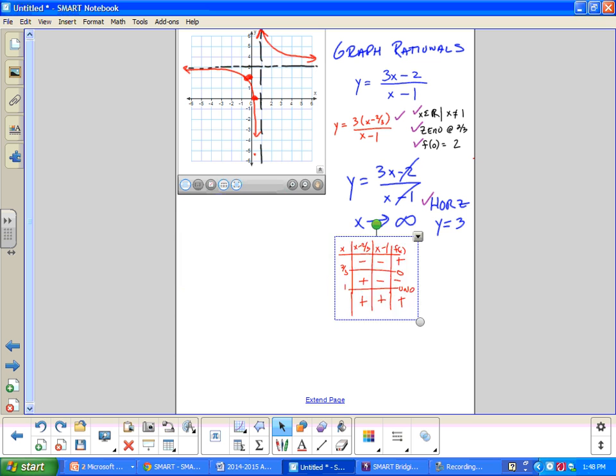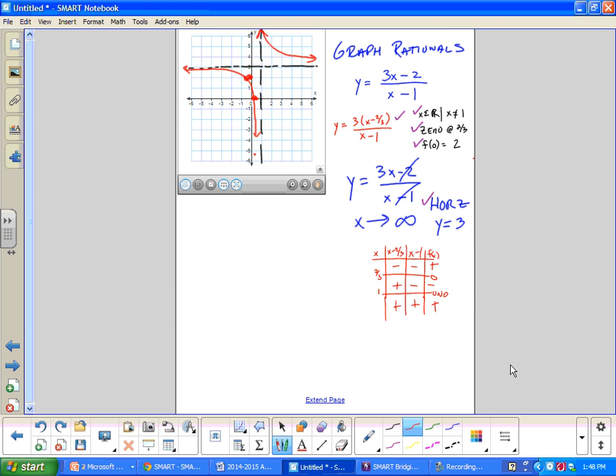The other method which the textbook doesn't do, and not many people do, is you can always polynomial divide. Guys, I come back to the very beginning. I can take x minus one into three x minus two. The first is three, and I get three x minus three. Change the signs, I get one. So I can write f of x equals, and I'll split the order down here, one over x minus one plus three.